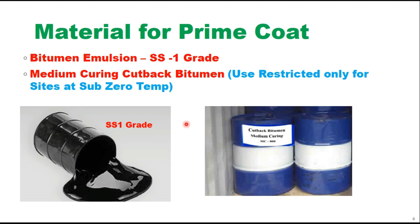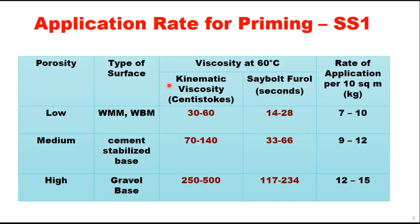The material for prime coat can be either bitumen emulsion of SS1 grade, or medium curing cut back bitumen — but its use is restricted only for sites at sub-zero temperatures. The cationic bitumen emulsion should be as per IS 8887, and the cutback should be as per IS 217.